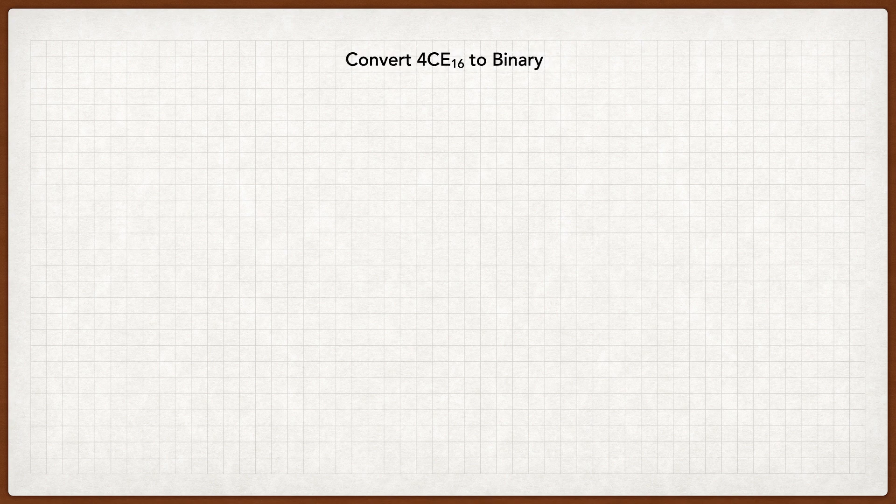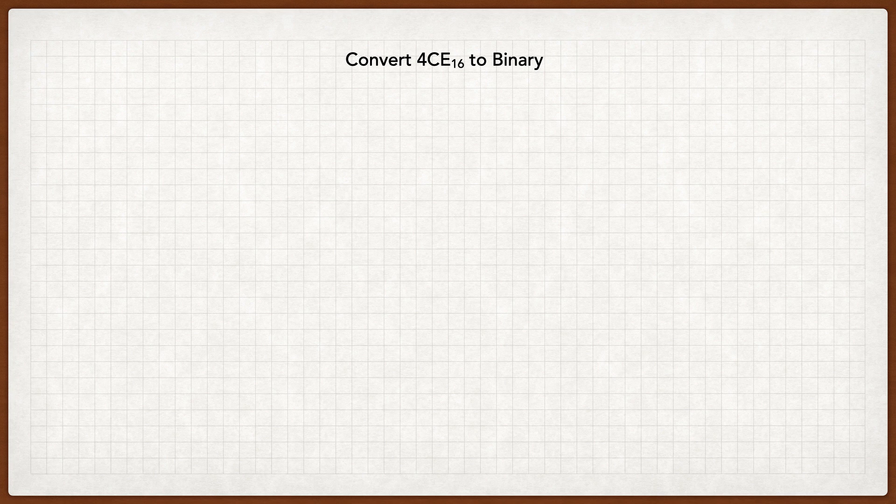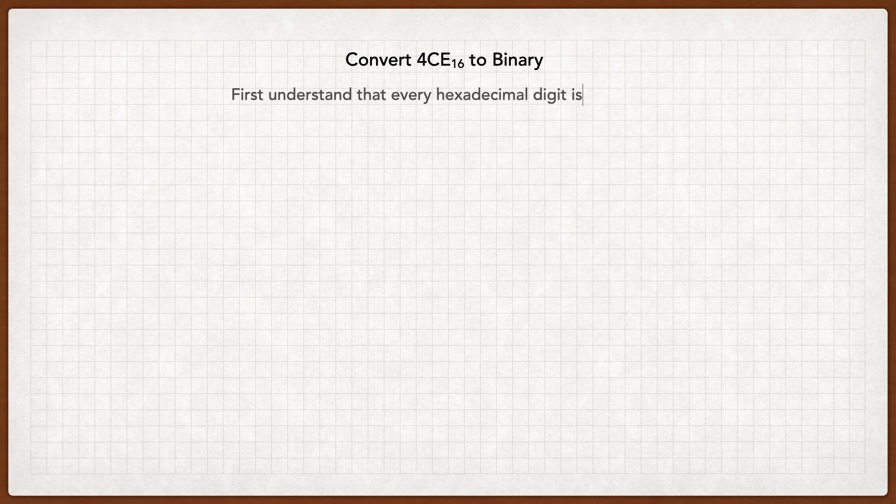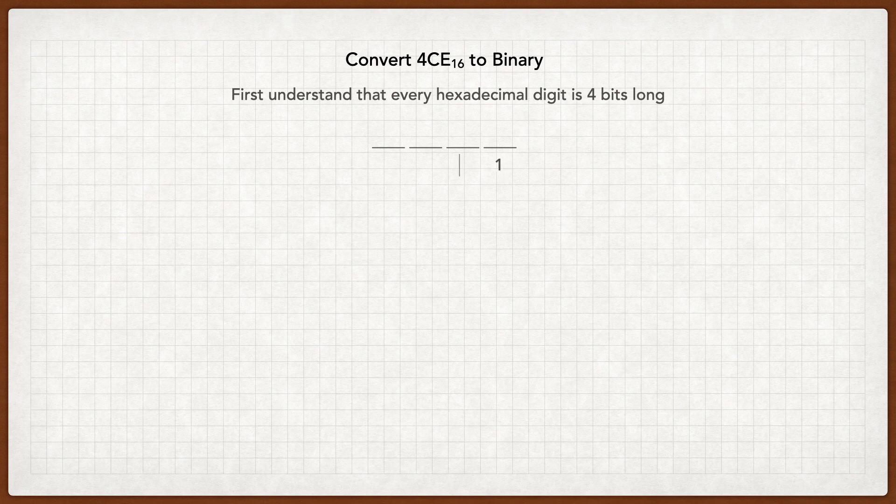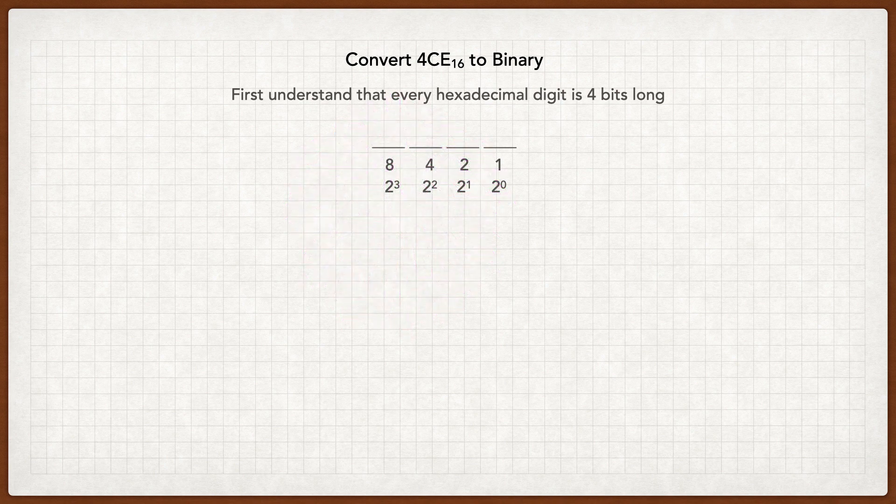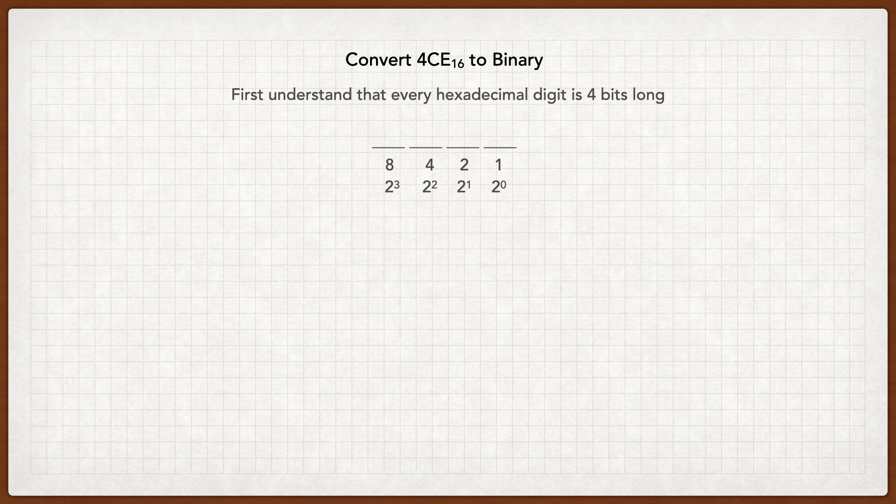Now we're going to convert 4CE in hexadecimal to binary. First, we need to understand that every hexadecimal digit is 4 bits long. And each of these bits is 2 to the power of 0, 2 to the power of 1, 2 to the power of 2, and 2 to the power of 3. And I'll just write that underneath so we can see it visually. So each hexadecimal number have these, or a total of these numbers. So 8 plus 4 is 12, plus 2 is 14, plus 1 is 15.